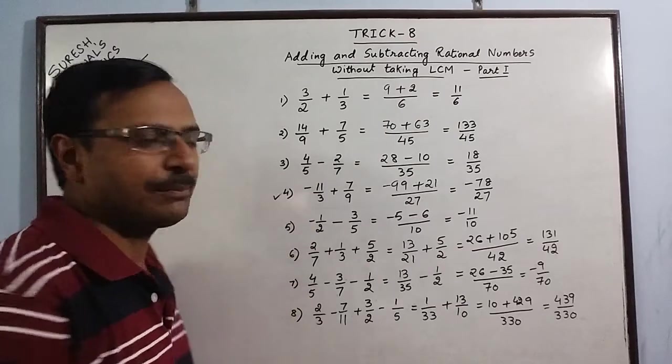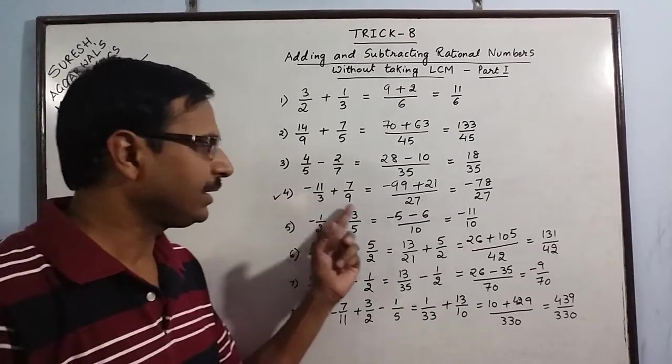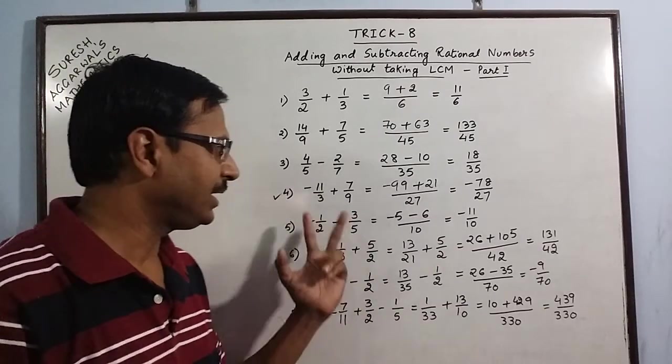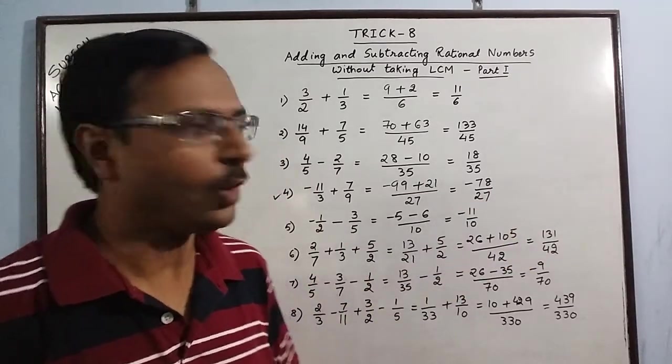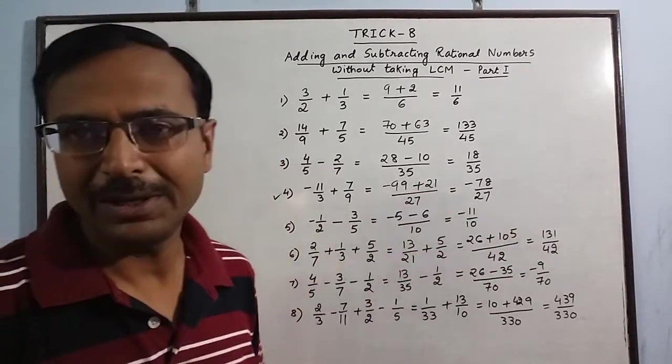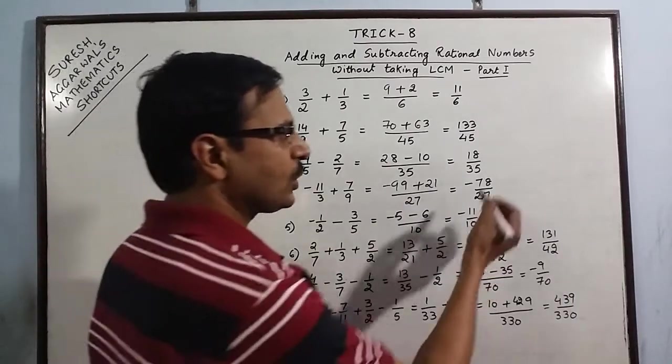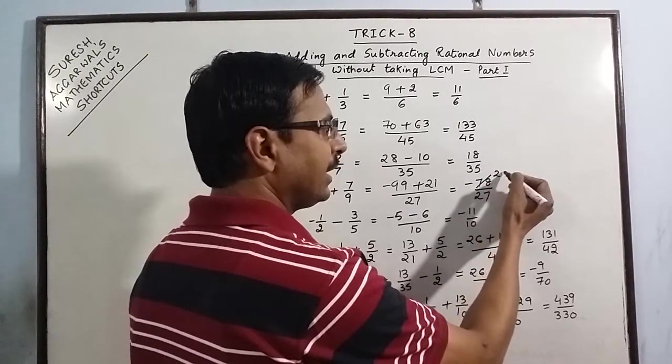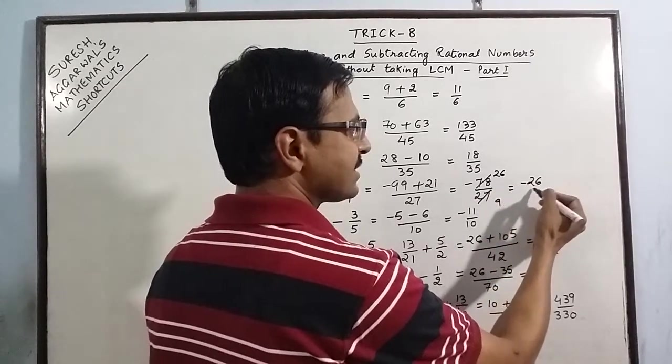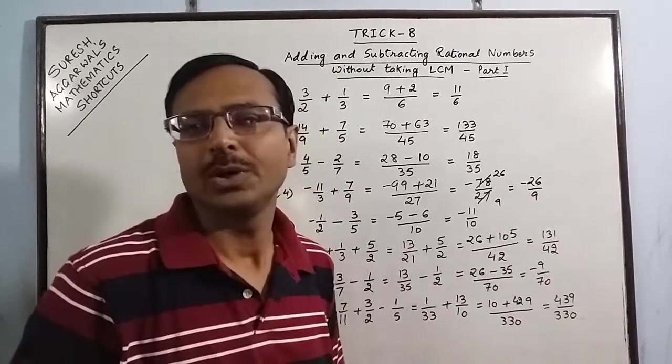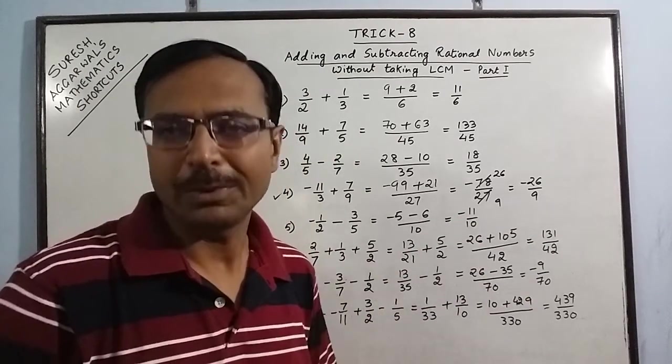But in the fourth example, 3 and 9 had a common factor of 3 between them, so the final answer also has a factor of 3 between the numerator and denominator which you can cancel out and arrive at the final result, which is minus 26 by 9. So you can add that little step to the previous video.